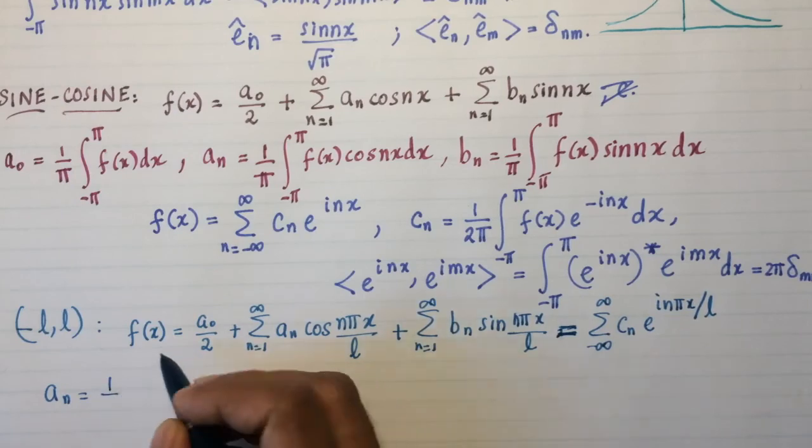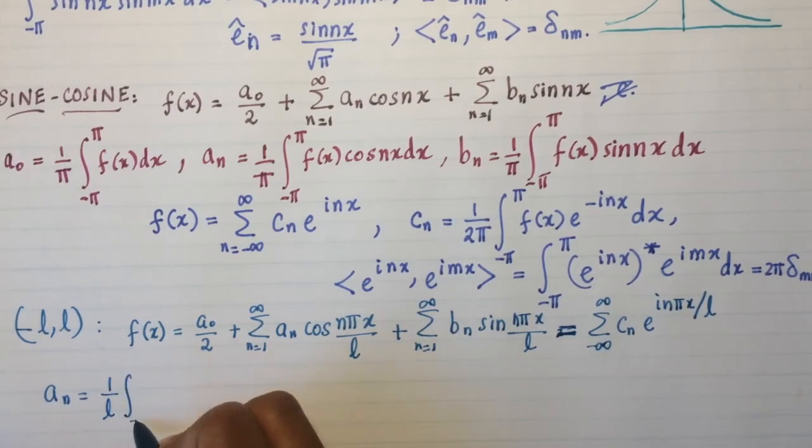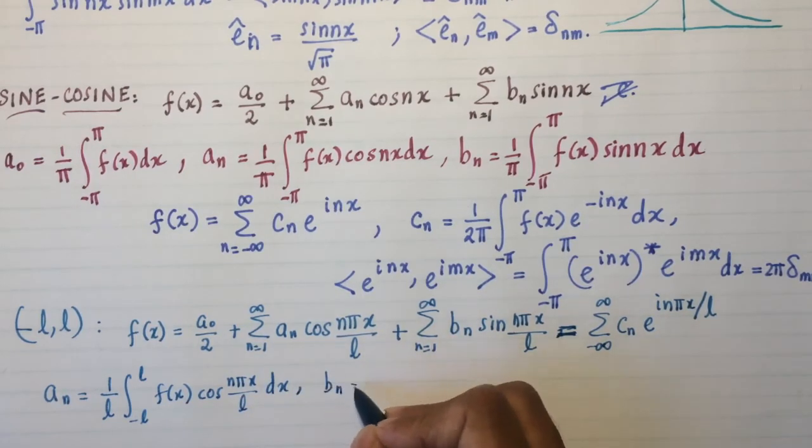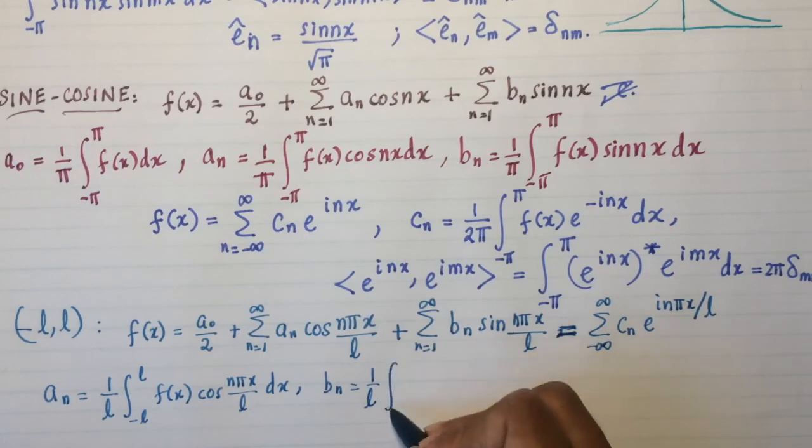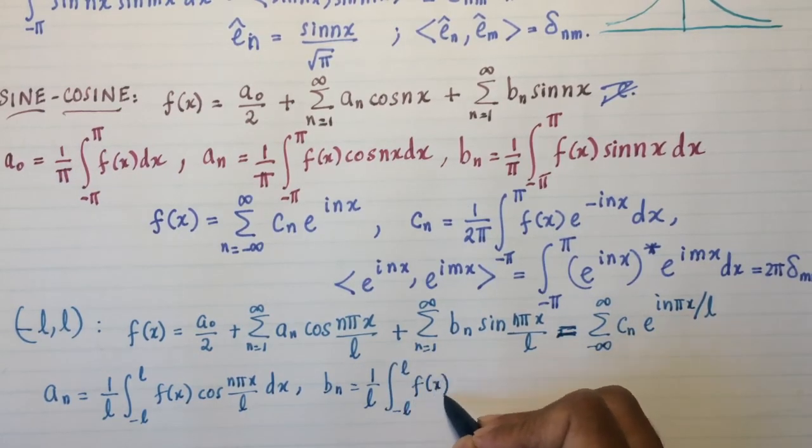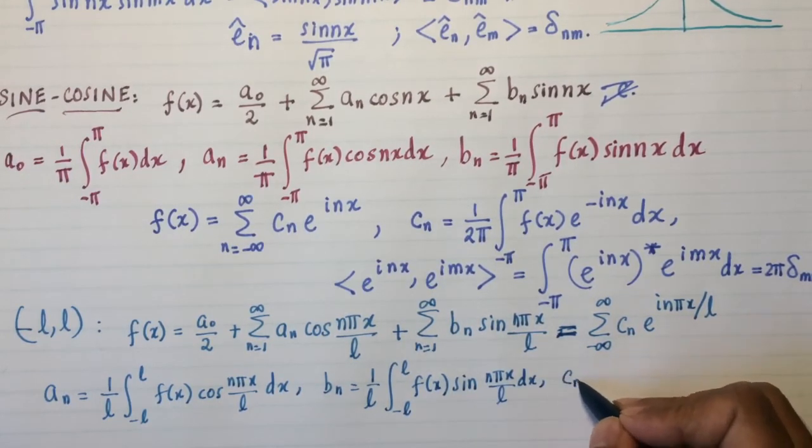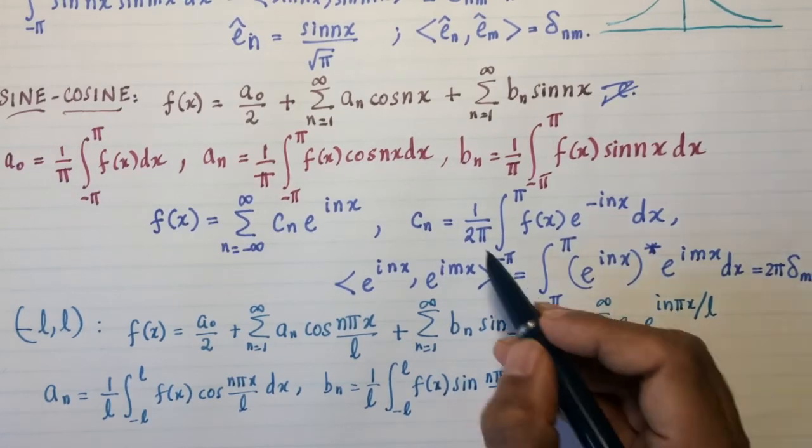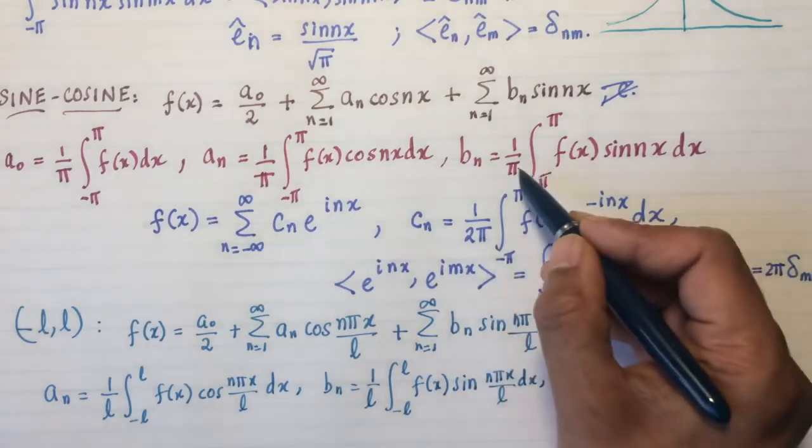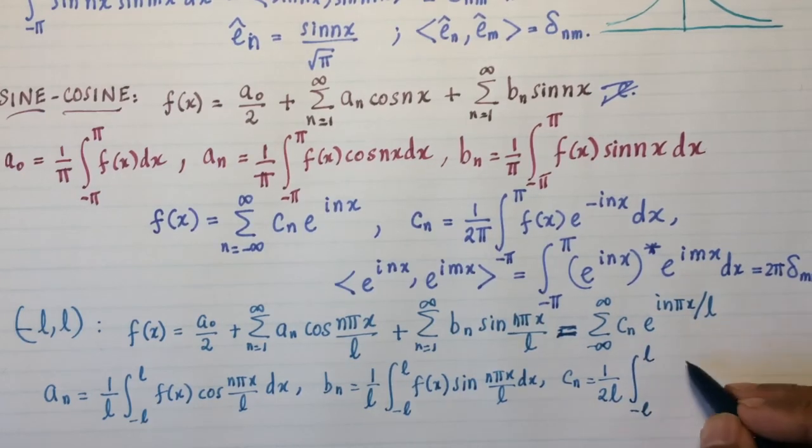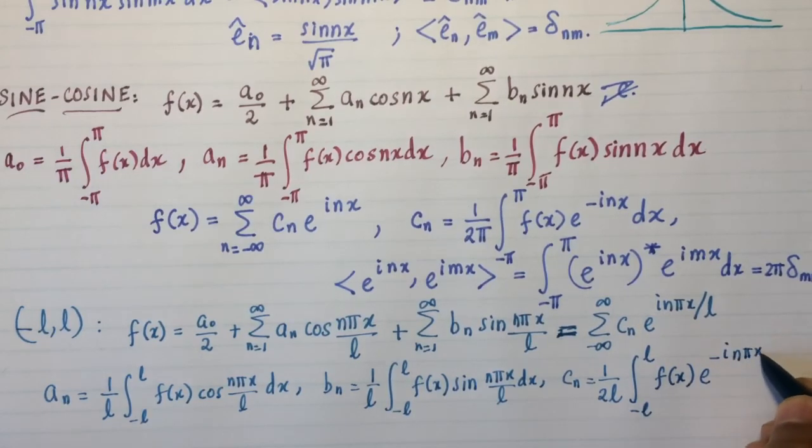So a_n in this case will be instead of 1/π, you'll now write 1/L. Integral -L to L, f(x) cos(nπx/L) dx, and b_n will be written as 1/L, integral -L to L, f(x) sin(nπx/L) dx. And lastly, c_n is 1/(2L), because you always have that 2π type of thing, 1/π here, 1/(2π) here, so there's always double the amount in the denominator when you're dealing with the complex coefficients. So f(x) e^(-inπx/L) dx. So that completes that kind of normalization.